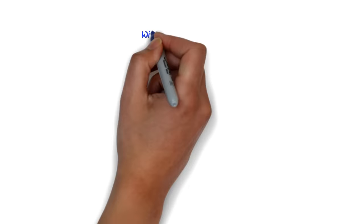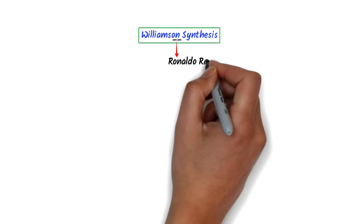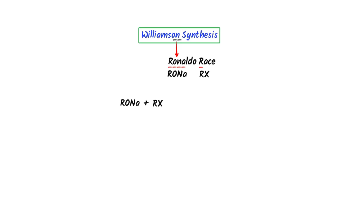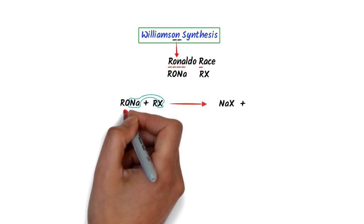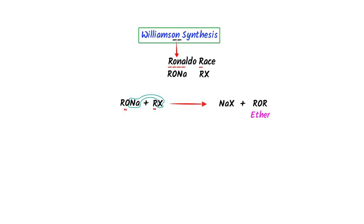Now let me teach you Williamson synthesis. This 'ON' in Williamson reminds me of 'Ronaldo Reyes.' R-O-N-A is sodium alkoxide, and R in Reyes stands for R-A-X, alkyl halide. These are the reactants. Sodium (being positive) will attack the halogen to give sodium halide, and R-O with R combine together to form ether. This is the Williamson synthesis reaction.